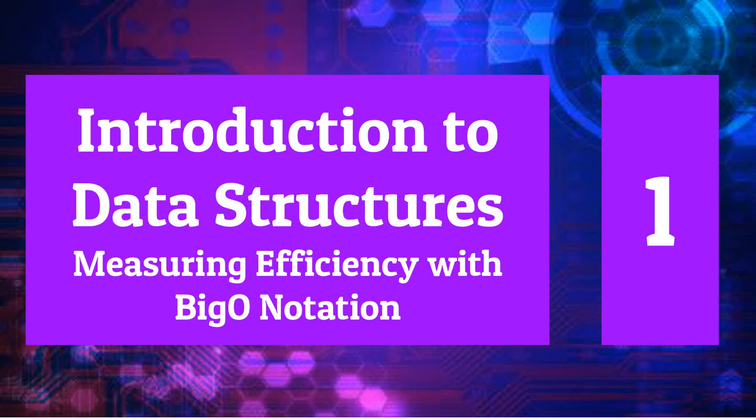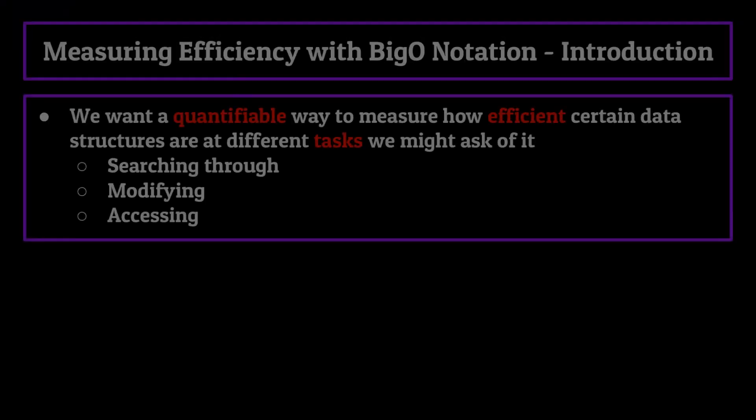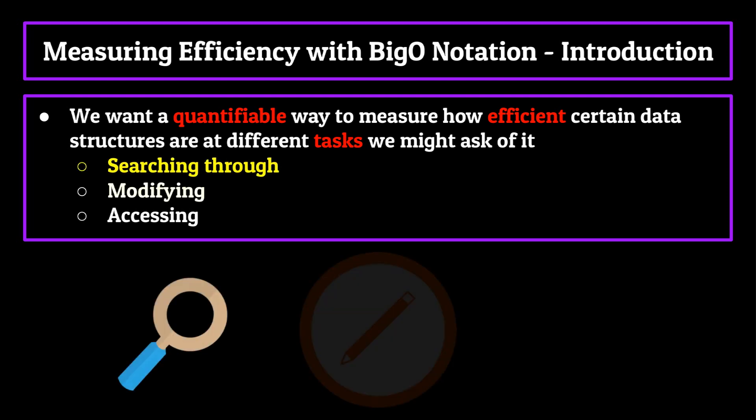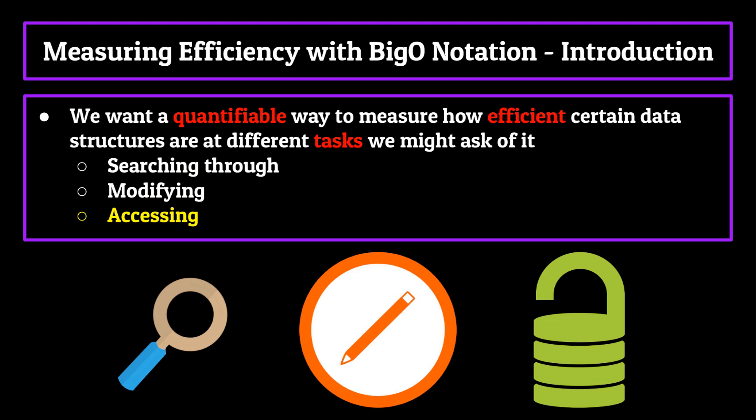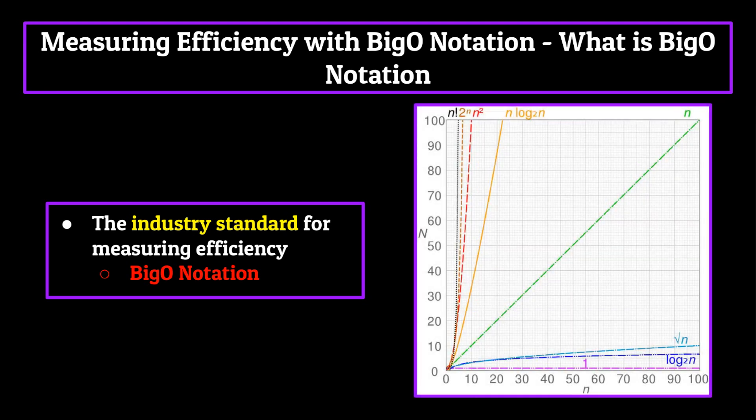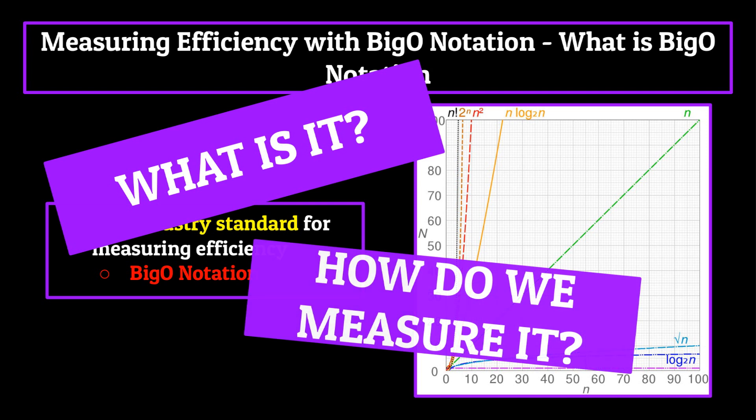Before we talk about all these crazy data structures like maps and heaps, we want a quantifiable way to measure how efficiently certain data structures are at different tasks we might ask of it. If we're going to be storing extremely large amounts of data, being able to search through, modify or access the information within a data structure needs to be fast and efficient. The industry standard for this kind of stuff is Big O notation. So what exactly is Big O notation and how do we measure it for a specific data structure? That's what we'll be covering in today's segment.